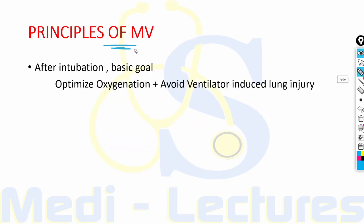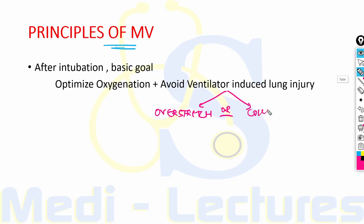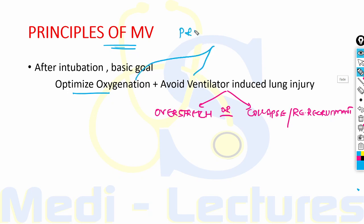After intubation, the basic goal is to optimize oxygenation while avoiding ventilator-induced lung injury, which can occur as either over-stretching or collapse of alveoli (atelectrauma). The combination of oxygen optimization and avoiding ventilator-induced lung injury forms the basis of protective ventilatory strategy.